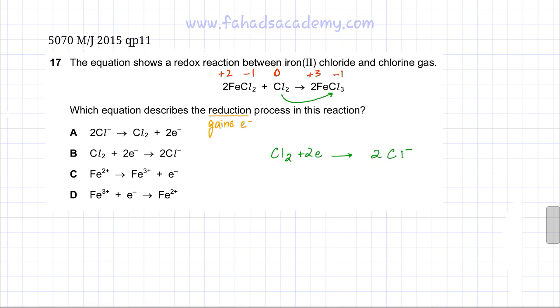So this would be the reduction equation. The other equation would be the oxidation equation, where Fe actually loses electrons, 2 plus and forms Fe 3 plus. So the correct option for the reduction equation is going to be option B.